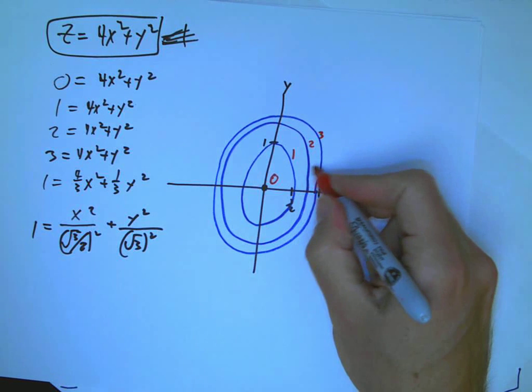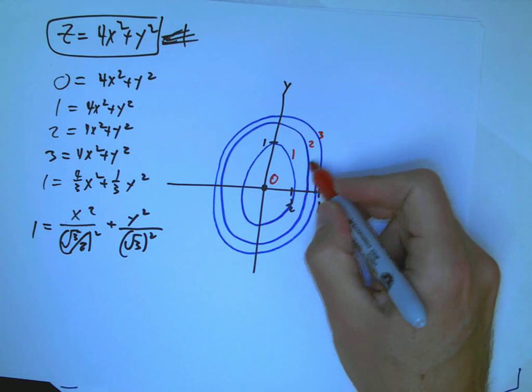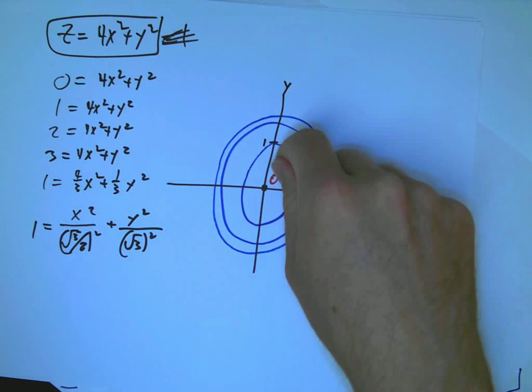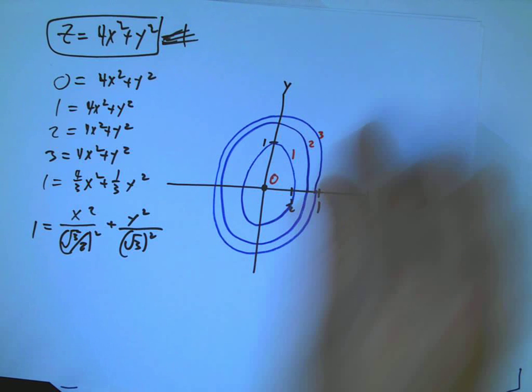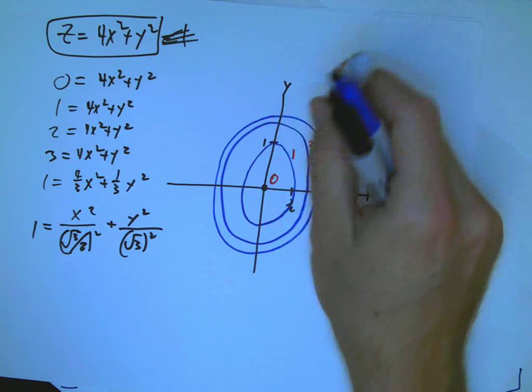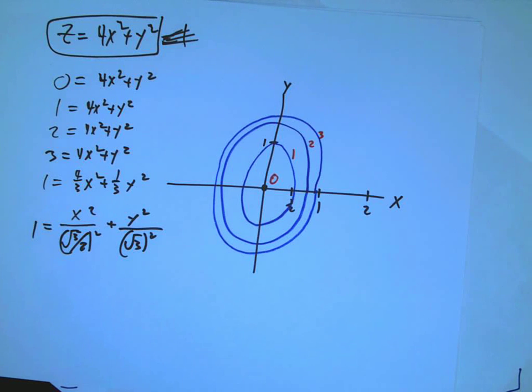When contours get closer together, it means the smaller change in x or y gives you the same change in z. Because remember that going from each contour to the next contour is exactly the same increment in z. That's really important for a contour plot to be not misleading, is that these guys have to be regularly spaced.